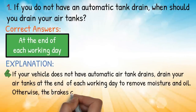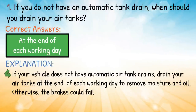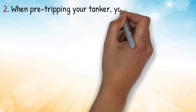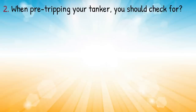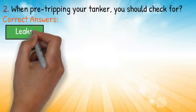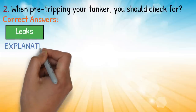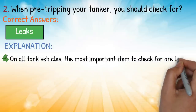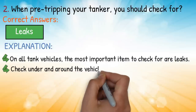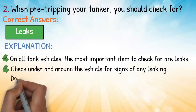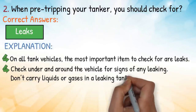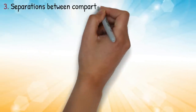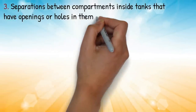Question two: when pre-tripping your tanker, you should check for — correct answer: leaks. Explanation: on all tank vessels, the most important item to check for is leaks. Check under and around the vehicle for signs of any leaking. Don't carry liquids or gases in a leaking tank. Question three: separations between compartments inside tanks that have openings or holes in them are called — correct answer: baffles.